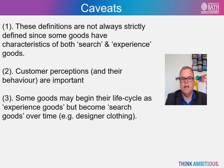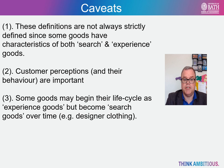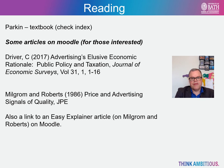We conclude with some caveats. These definitions are not always strictly defined, since some goods have characteristics of both search and experience goods. What is important is customer perception. Some consumers may consider some goods as search goods, while for others they are experience goods. Also, some goods may begin their life cycle as experience goods but become search goods over time — for example, designer clothing such as jeans: once a brand becomes established, it is less of an experience good and more of a search item. Check out your textbook for anything on advertising. The Milgram and Roberts paper is quite technical, so there is a short easy explainer for which there is a link on Moodle.